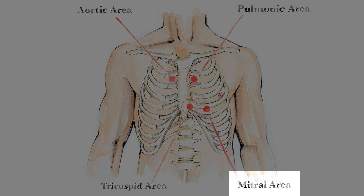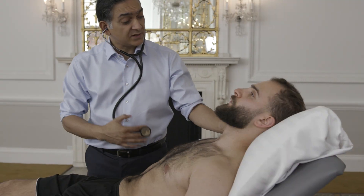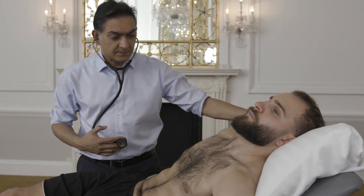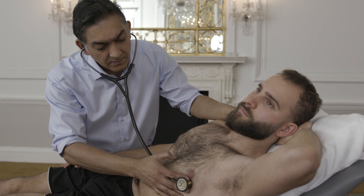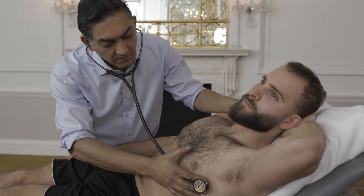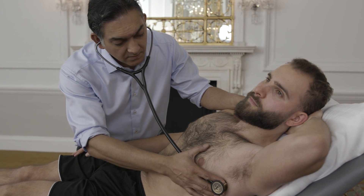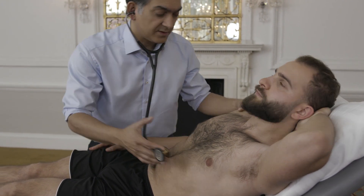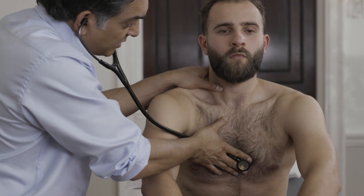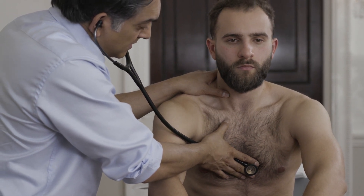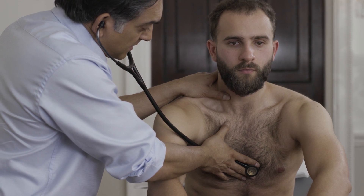Prosthetic mitral valves may be heard as a loud ticking first heart sound audible from the end of the bed. Perform reinforcement manoeuvres to help detect diastolic murmurs. With the bell on the apex, ask the patient to roll onto his left side and hold his breath in expiration to reinforce the murmur of mitral stenosis. With the diaphragm over the left lower sternal edge, ask the patient to sit forwards and hold his breath in expiration to reinforce the murmur of aortic regurgitation.